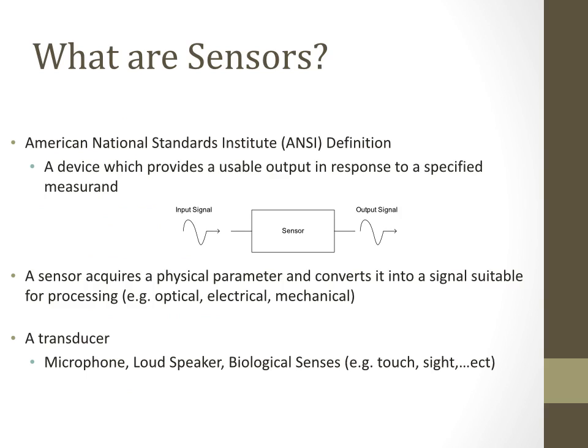The American National Standard Institute (ANSI) definition for a sensor is: a device which provides a usable output in response to a specified measure. This means there is an input signal and an output signal — the input signal can be anything, but the output is in electrical form. Another definition: a sensor acquires a physical parameter and converts it into a signal suitable for processing, such as optical, electrical, or mechanical.